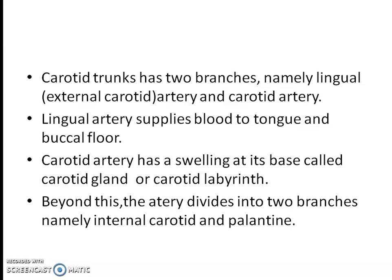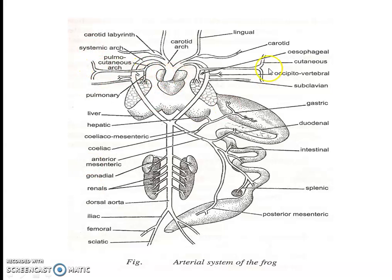The carotid trunk has two branches: the lingual artery and the carotid artery. The carotid artery is also known as the external carotid. The lingual artery supplies blood to the trunk and buccal floor.